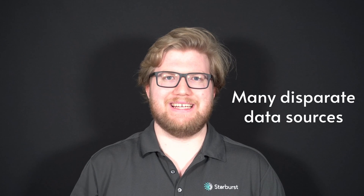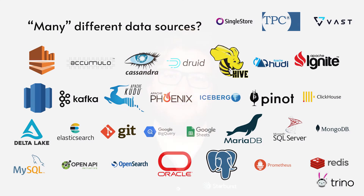Let's talk about what "many disparate data sources" means. Trino supports a lot of them — from traditional relational databases, to non-relational databases, to data lakes, to in-memory data stores, and more. Because Trino understands and interacts with these data sources directly, it's able to query all of them with the same unified ANSI standard SQL dialect, even for data sources that wouldn't traditionally support SQL queries.